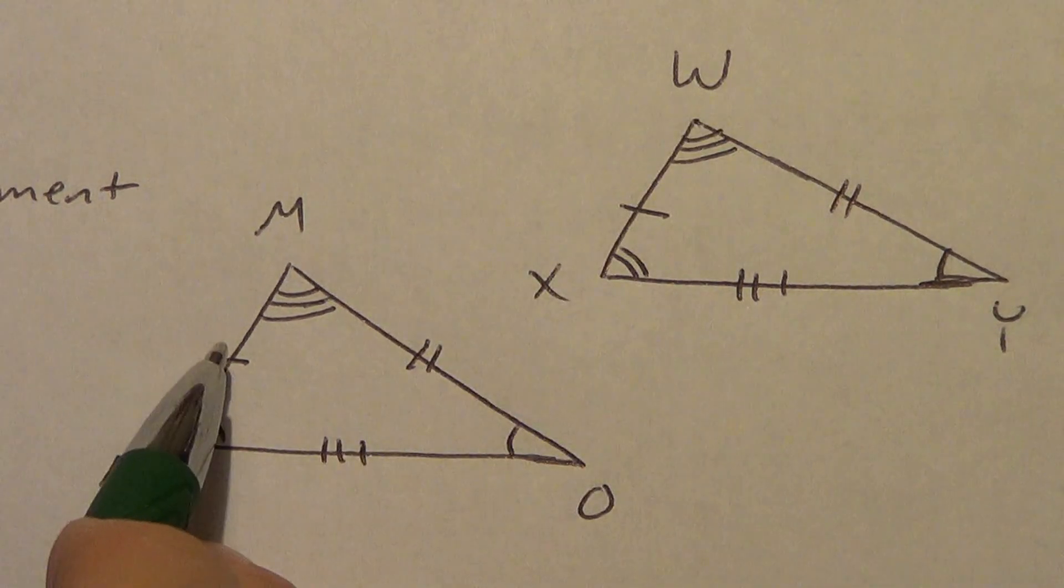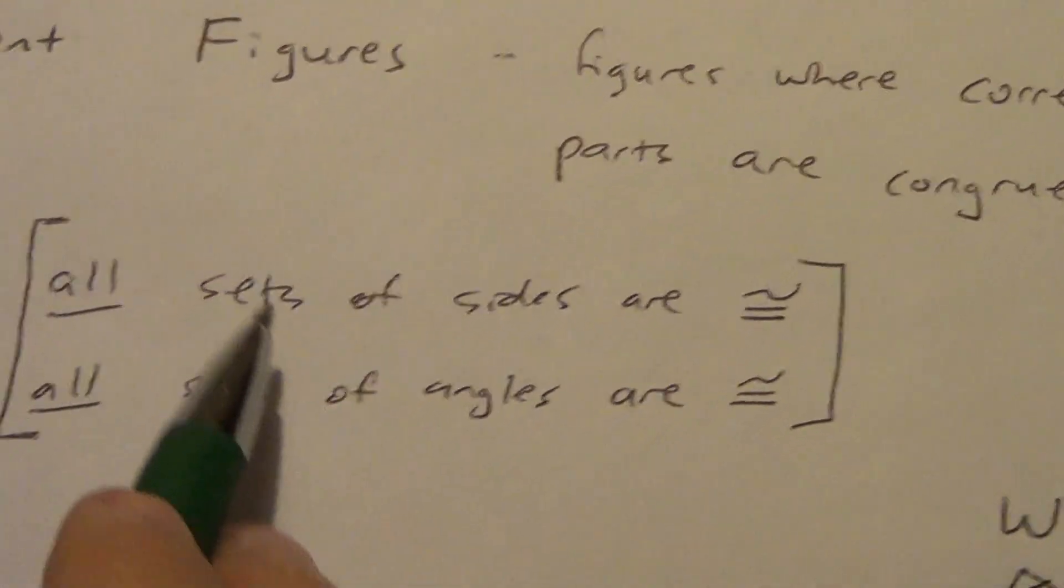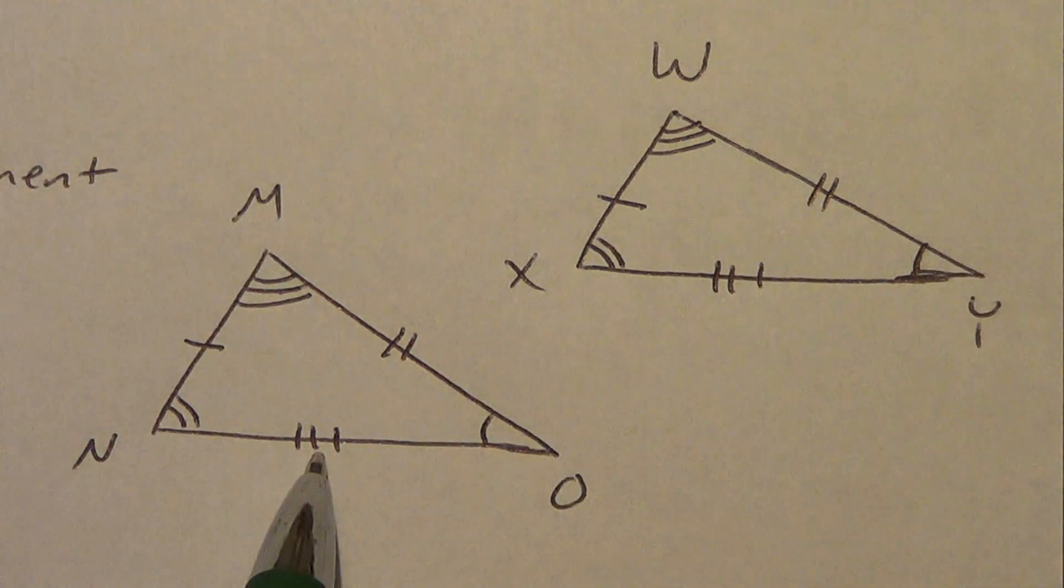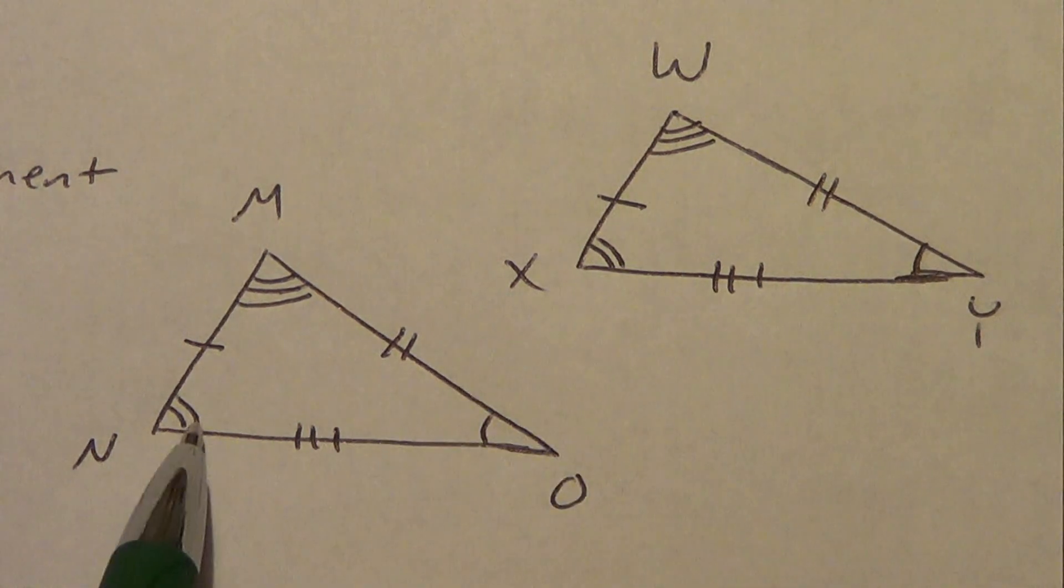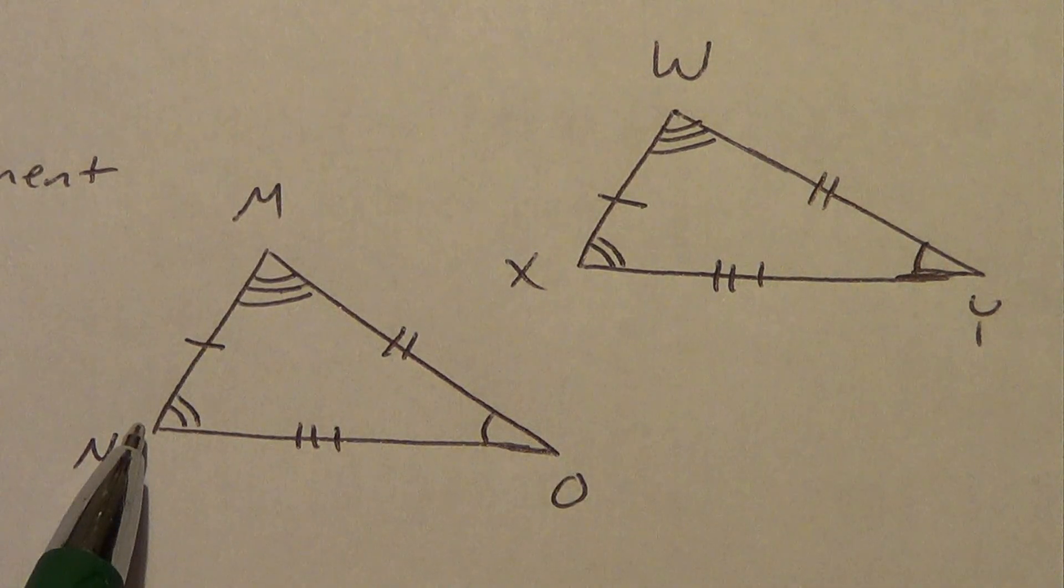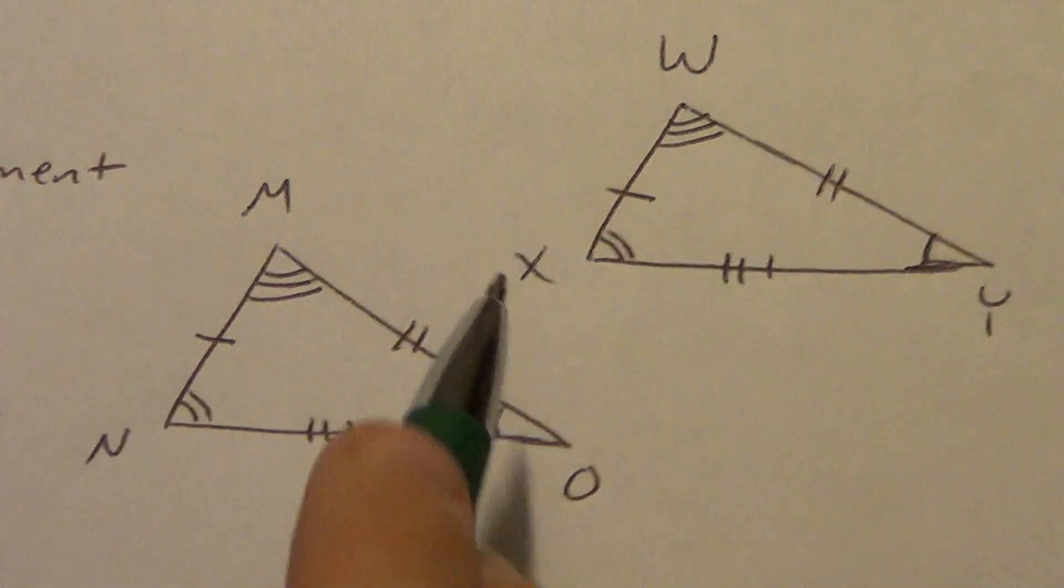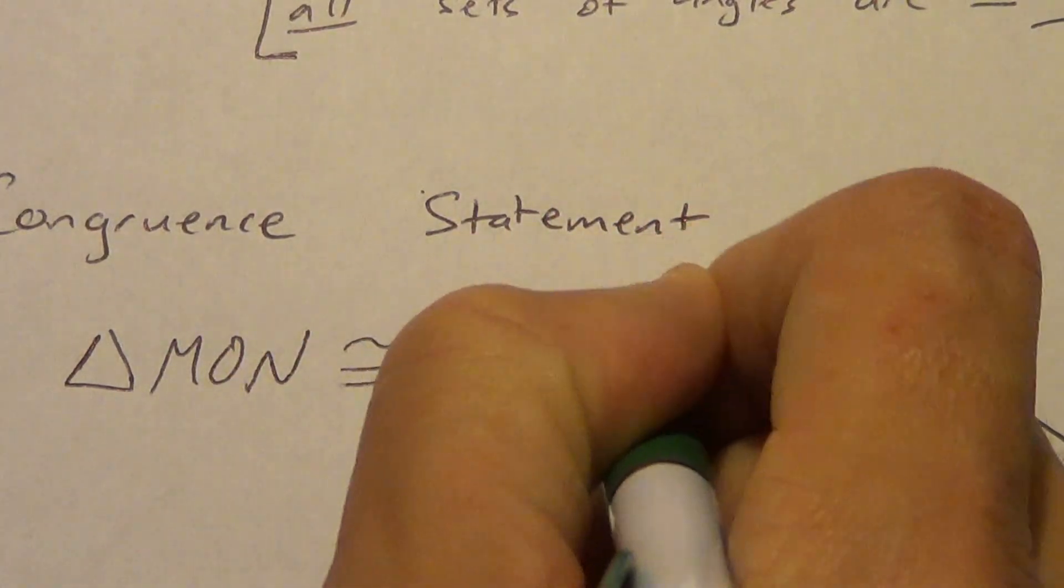We got one mark on this side, one mark on this side. Two and two on the angles, three and three on the sides, one and one on the angles, and then two and two on the sides. So, we've got all the pieces congruent. Just what we were talking about up here. All sets of sides are congruent. All sets of angles are congruent. One set of sides, second set of sides, third set of sides. One set of angles, second set of angles, third set of angles. Now, if I name this triangle as M-O-N, you have to match the order up correctly over here. So, we would have to say W-Y-X. So, triangle M-O-N is congruent to triangle W-Y-X.